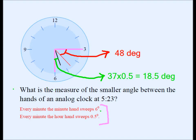So the green angle is 18.5 degrees and the red angle is 48 degrees. From 90, we subtract both to get our final answer: 90 minus (48 plus 18.5) equals 23.5. So the angle between the hands of the clock at 5:23 is 23.5 degrees.